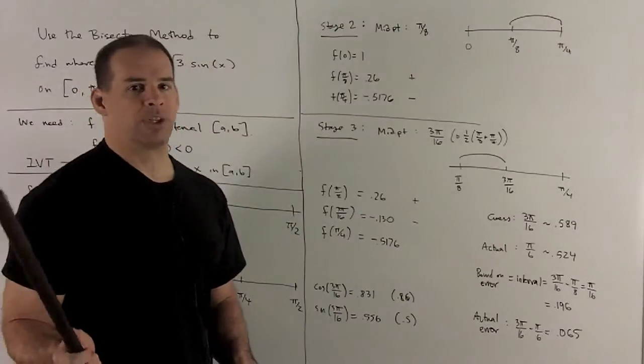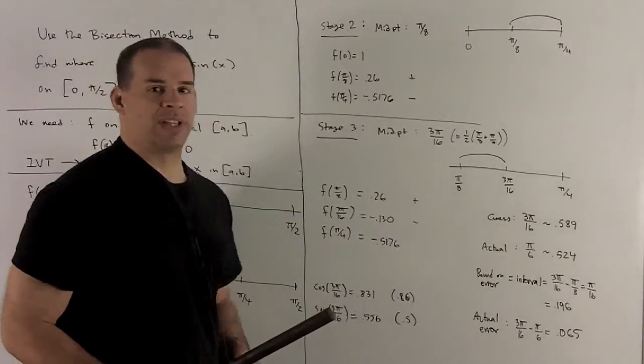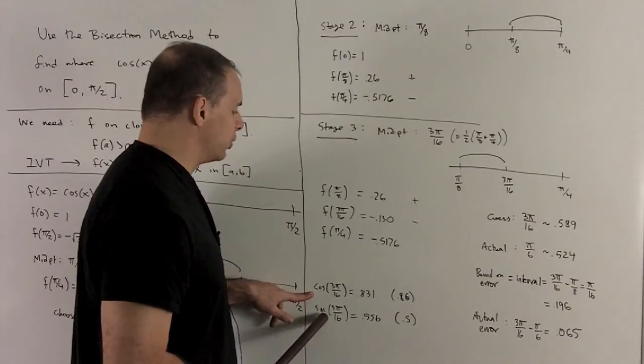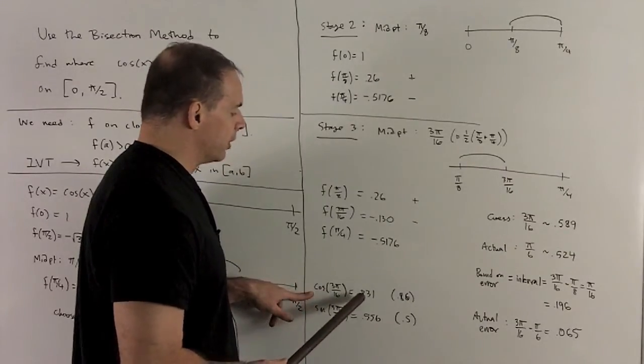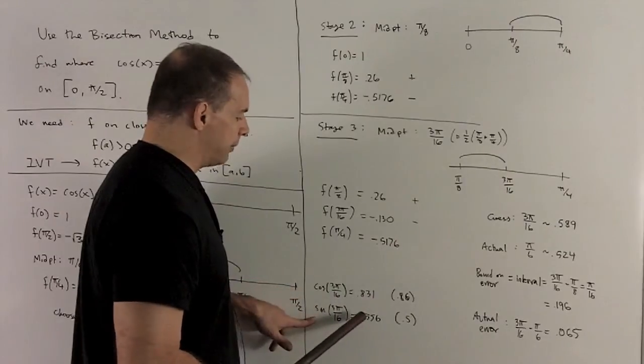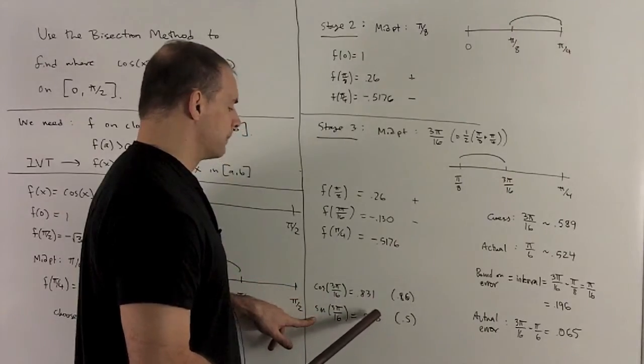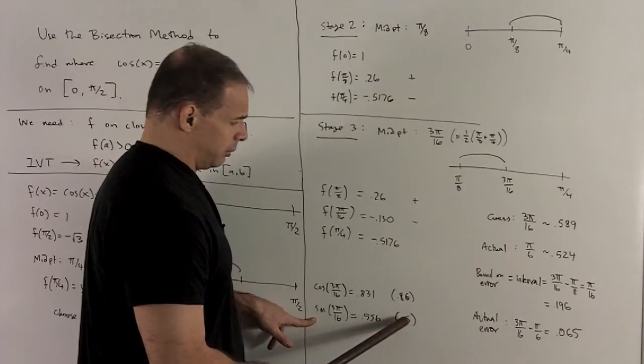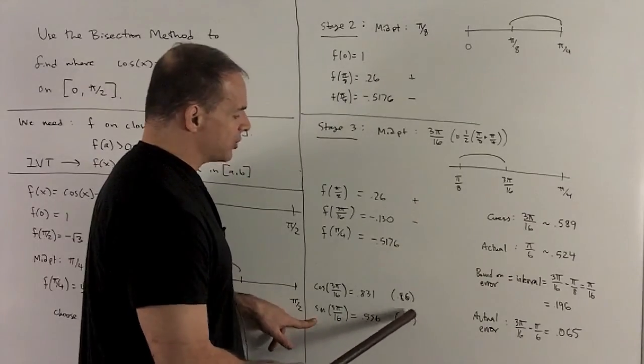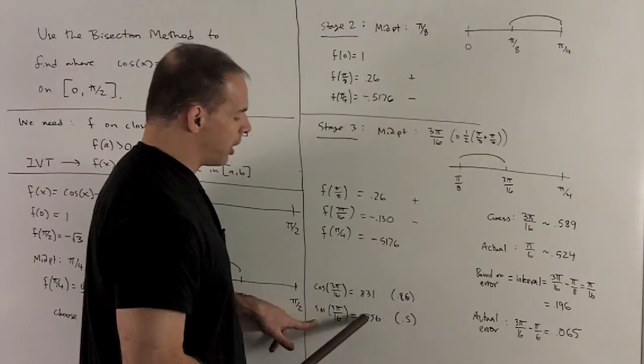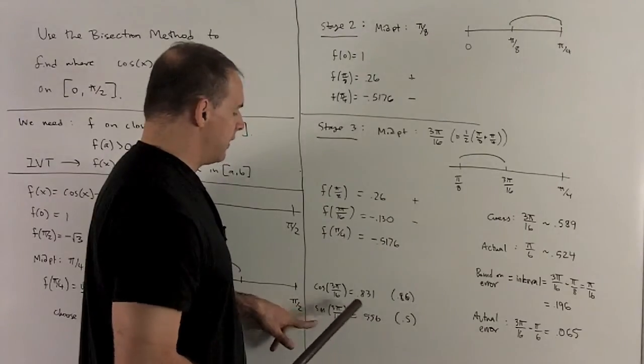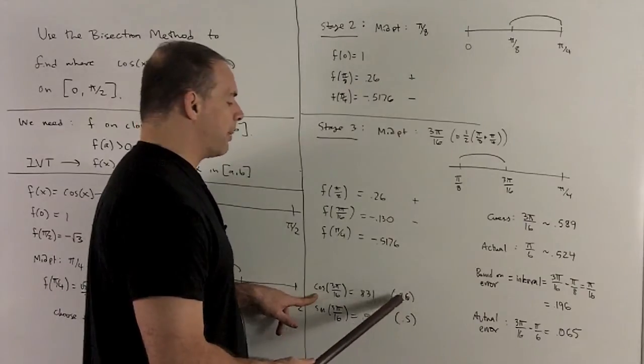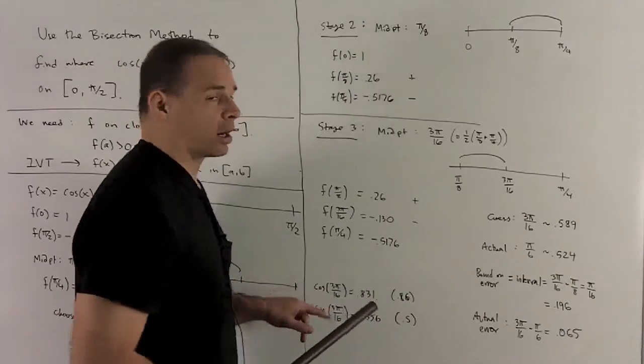One last thing we should check just to see how bad we are. If I put 3π/16 into cosine and sine, you'll notice what's going to come out. 0.831 and 0.556. So you see that here we have 0.5 is our real answer. So that's sort of in the ballpark of our 0.556. And then for the cosine, that's √3/2. That's going to be about 0.86. And this guy is sort of in the ballpark.